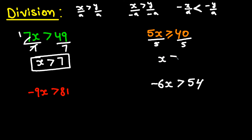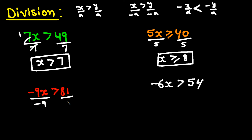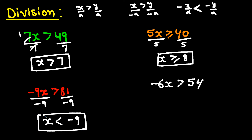This one is negative 9x greater than 81. I want to get rid of the negative 9, so I divide both sides by negative 9. Whenever you divide by a negative number, reverse the inequality symbol — so greater than changes to less than, giving us X less than negative 9.